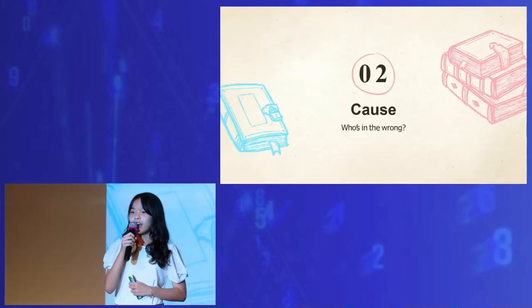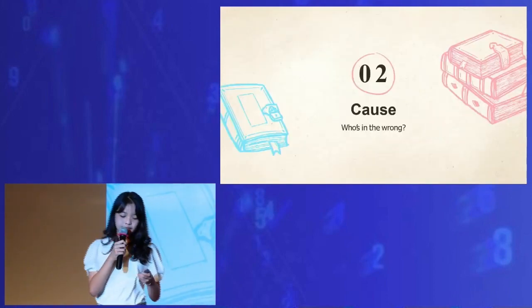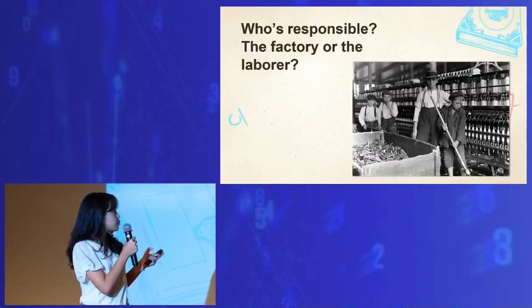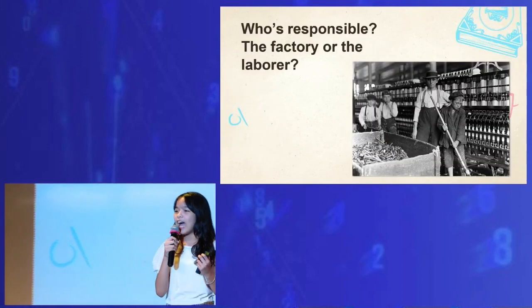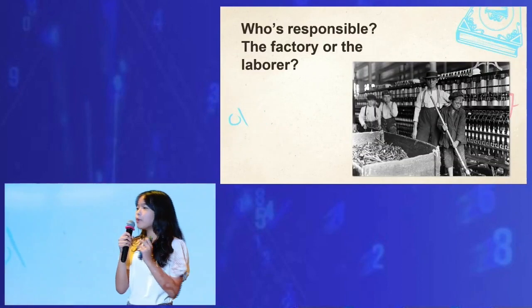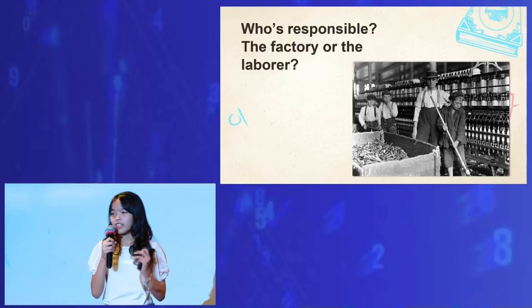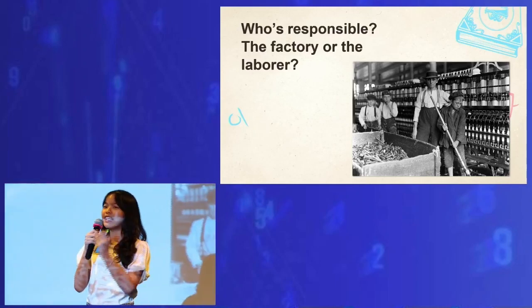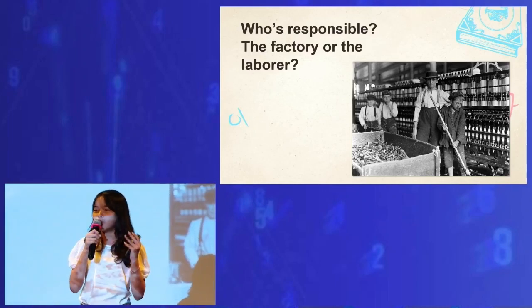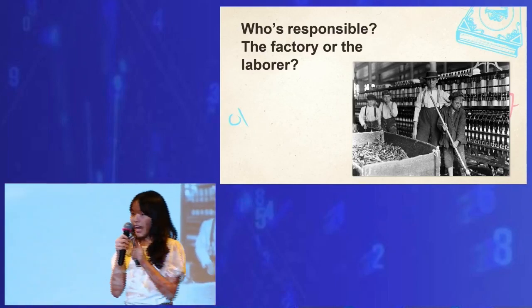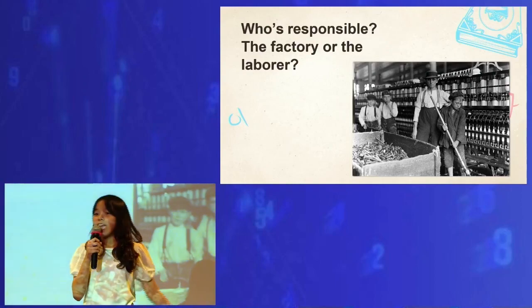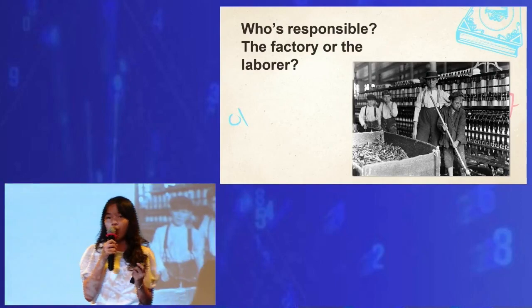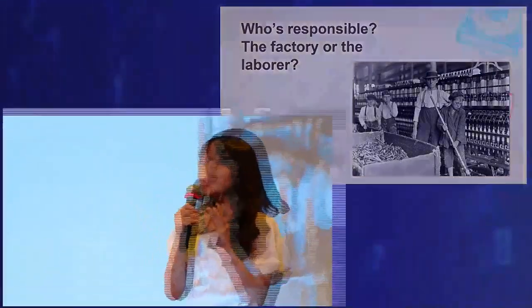The second part is the cause. History books have taught us that the people at fault are the factories and companies for allowing underage children to work in child labor, and that's not wrong, because they do contribute to this issue.